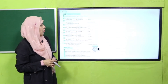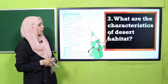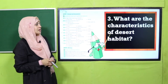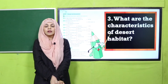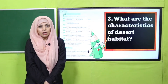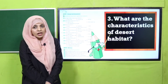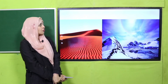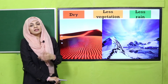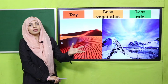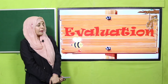Now we will move forward towards practice. Question number 3 on your screen: What are the characteristics of desert habitat? Quickly tell me. Very less rainfall, very less water, very less vegetation. And you can see it on your screen - dry, less vegetation and less rain. These are the characteristics of both hot and cold types of deserts. You can pause the video and do the question in your notebooks.